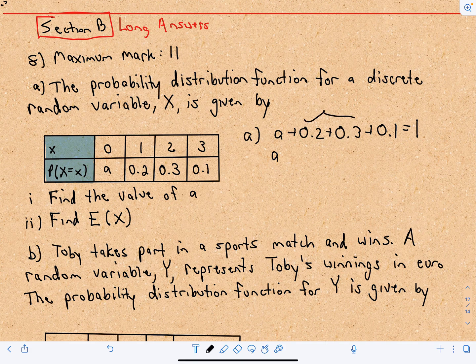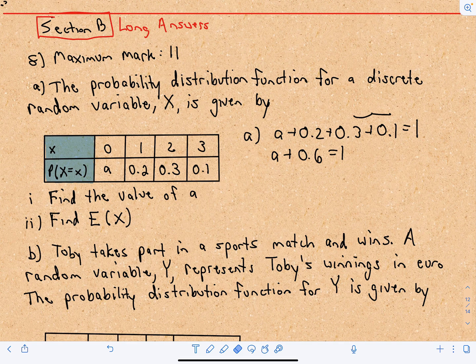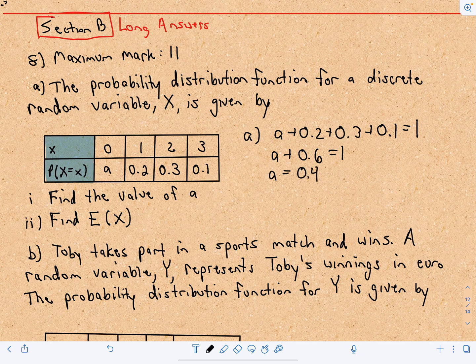0.2 plus 0.3, that's 0.5, plus 0.1, that is going to be 0.6. And then if we subtract 0.6 from both sides, 1 minus 0.6 is going to be 0.4.